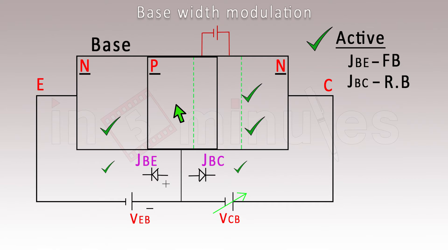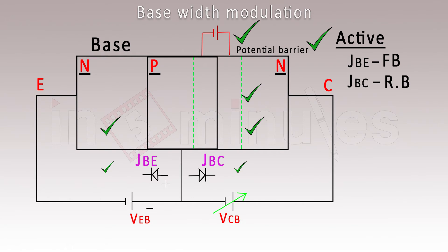The base is shown as a larger area here just for conceptual clarity. Initially, when the reverse bias voltage VCB is low, a depletion region is formed between the p and n regions. Even without applying any reverse bias, a potential barrier exists at the junction due to ions in the space charge region, also called the depletion region.